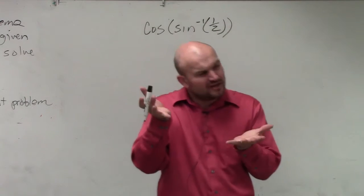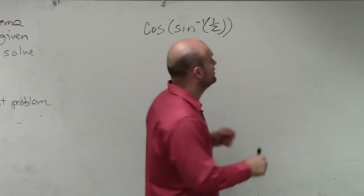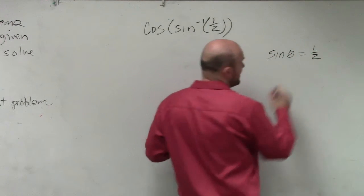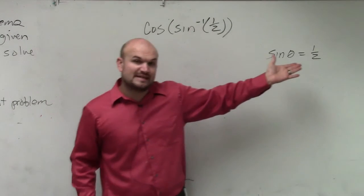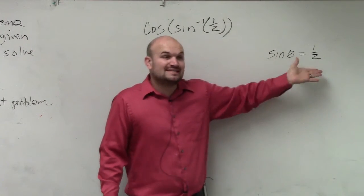A lot of you are still questioning what exactly is the sine inverse? What exactly is that representing? Well, to go back to that, if we have sine of theta is equal to 1 half, this is what we call a trigonometric equation. This is saying the sine of some angle is equal to 1 half.